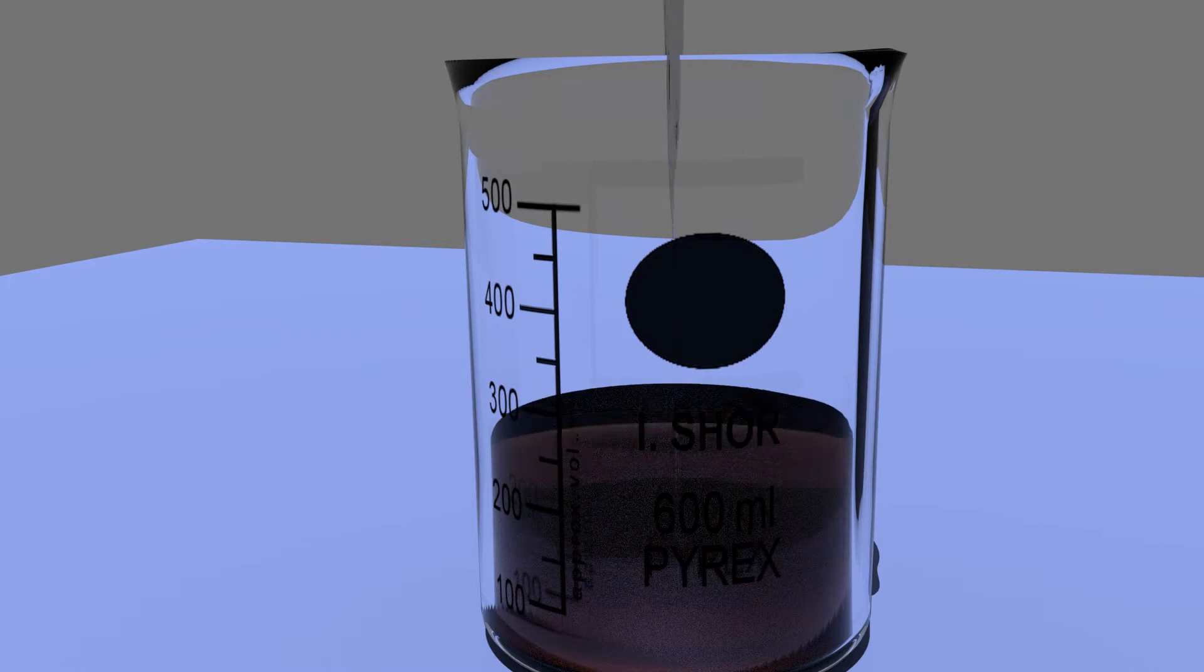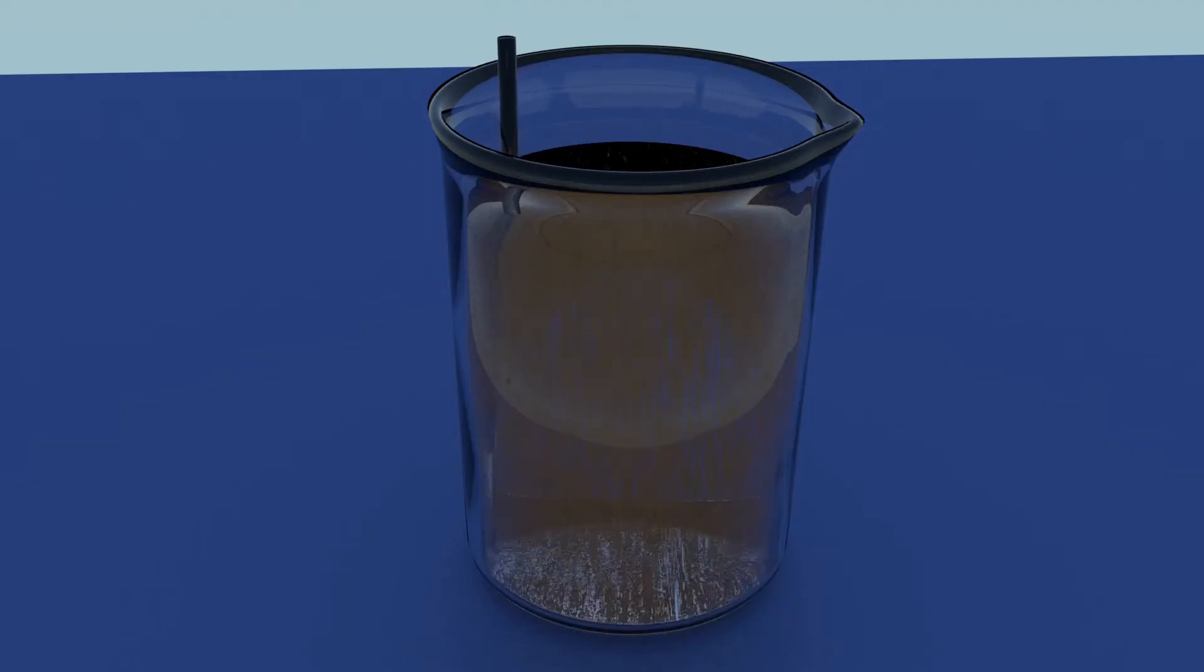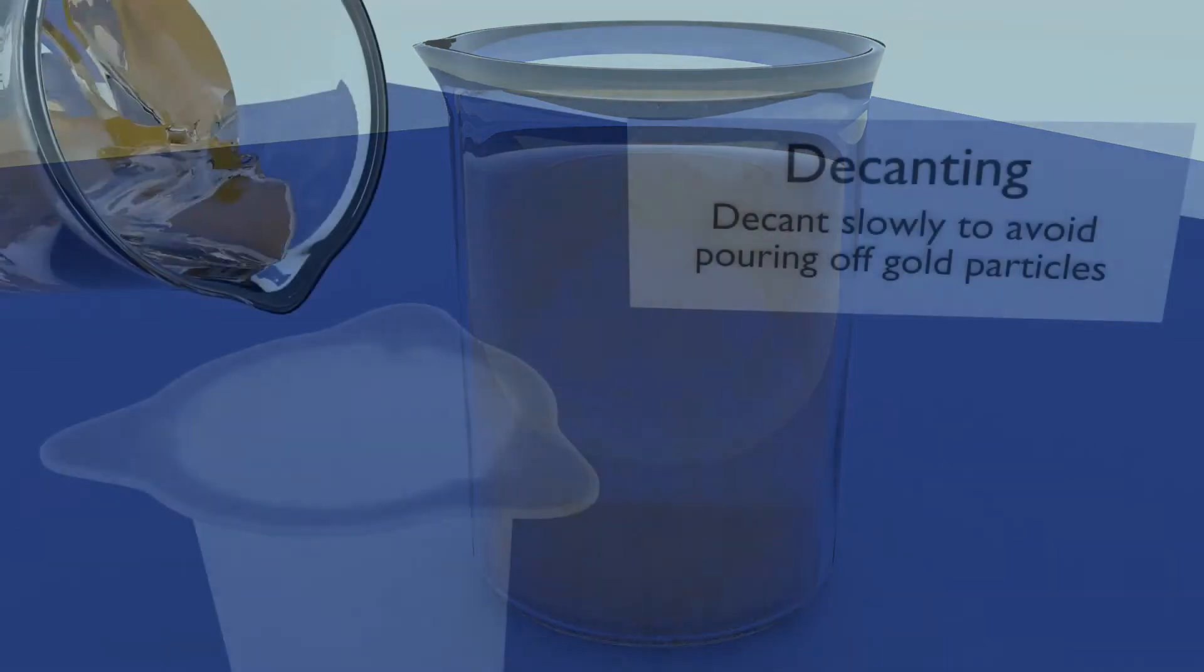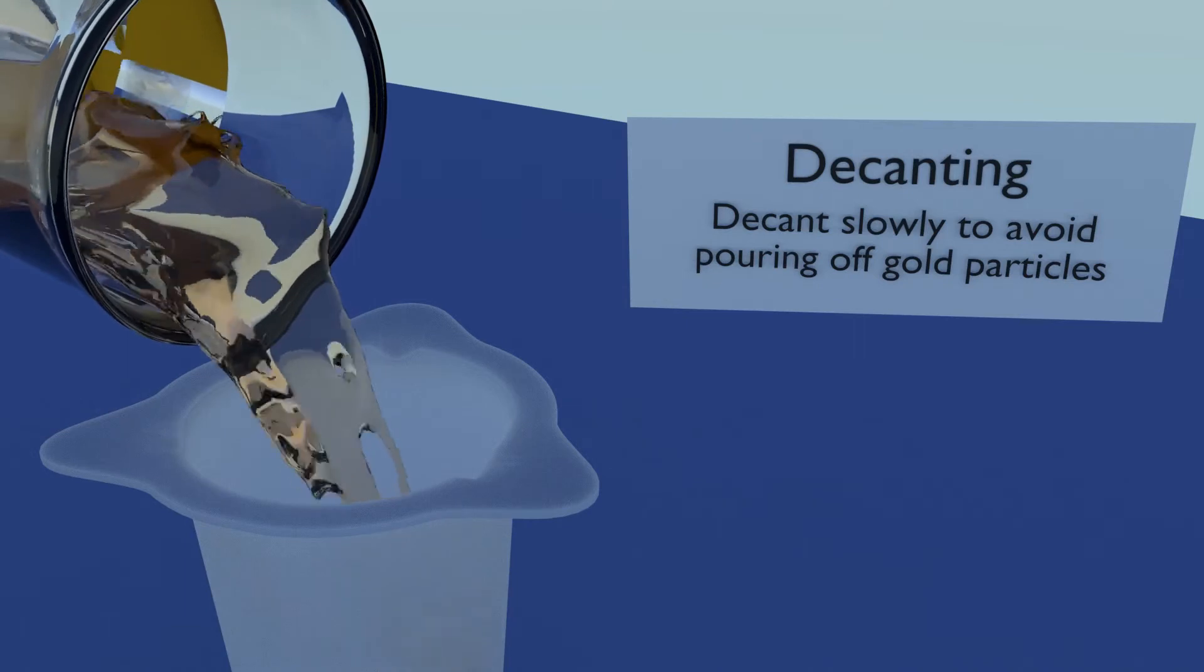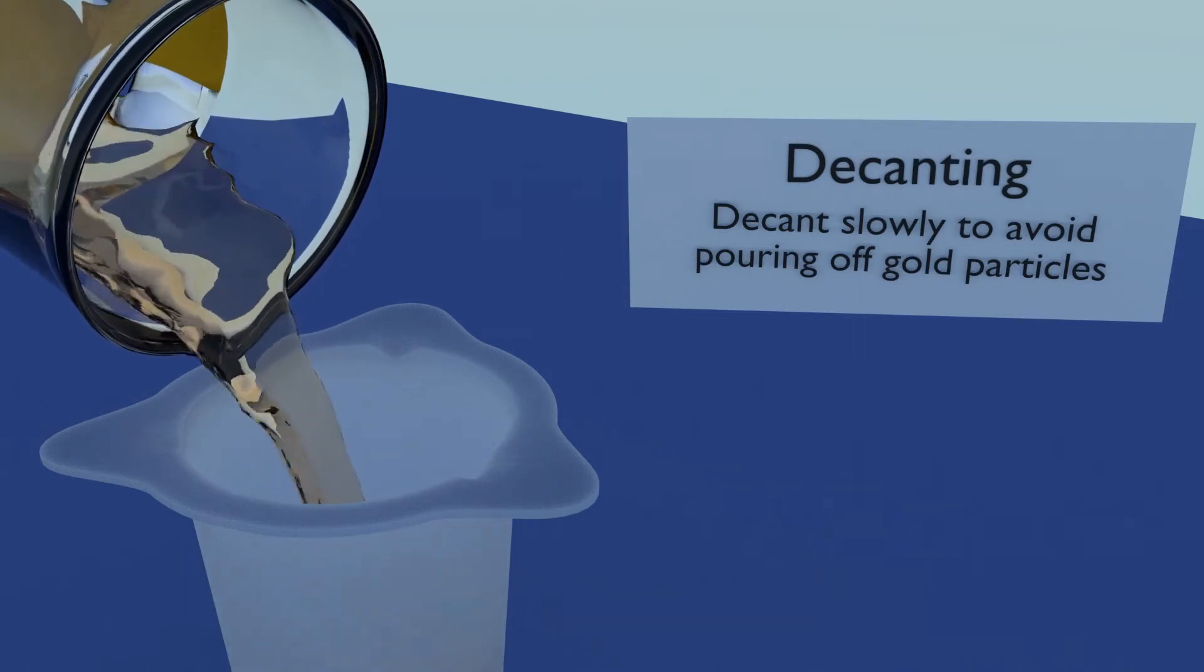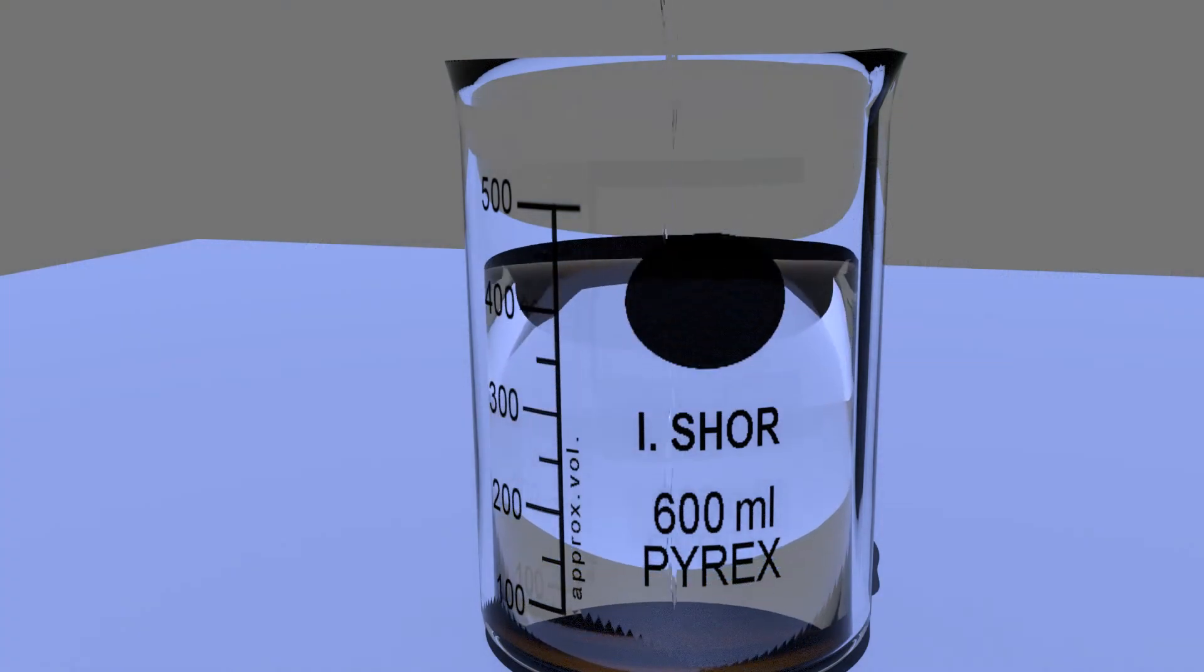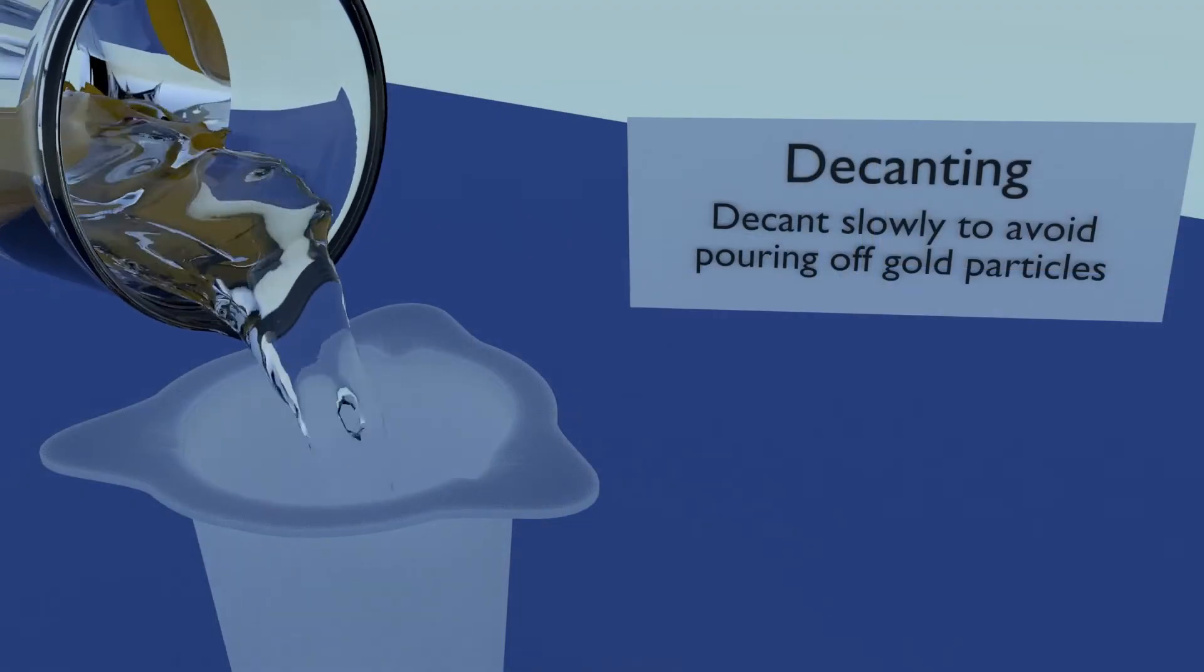Fill the beaker with water. Tap water is fine. If you would like, you can give the water a stir. Then give the gold particles a chance to settle. Decant the water, saving it to check later for gold particles. We will want to rinse one more time with water before checking to make certain that the gold has been thoroughly rinsed.